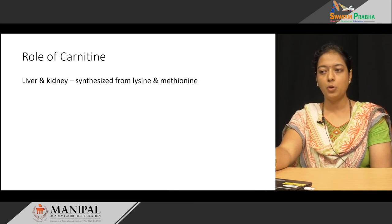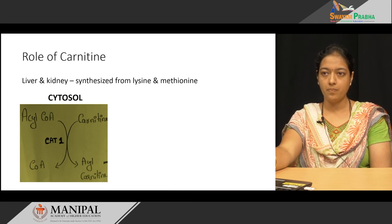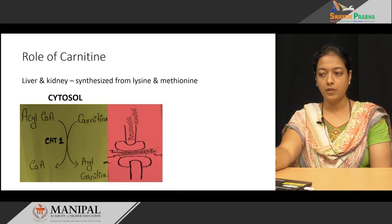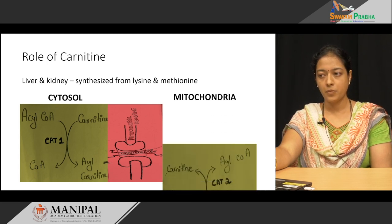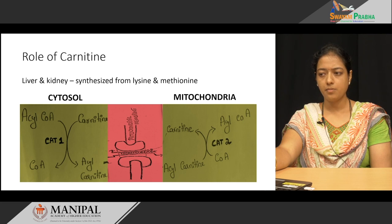Carnitine is synthesized from two amino acids, lysine and methionine. Carnitine is synthesized in the liver and kidneys. On the cytosolic side of the inner mitochondrial membrane, carnitine reacts with activated fatty acyl-CoA with the help of the enzyme carnitine acyl-transferase-1, forming coenzyme A and acyl-carnitine. The acyl-carnitine then enters the inner mitochondrial membrane with the help of translocase.